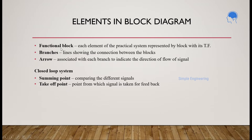Next are the elements in block diagram. We have the functional block — the element of the practical system where it is represented by a block with its transfer function inside. Next are branches, which are lines showing the connection between the blocks. Then arrows, associated with each branch to indicate the direction of the flow of signal — indicating from which branch to which branch the signal is going. In a closed loop system, we also have the summing point for comparing different signals, and takeoff points — the point from which a signal is taken for the feedback.